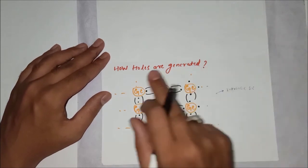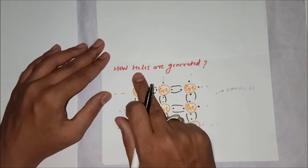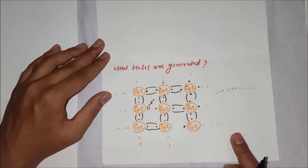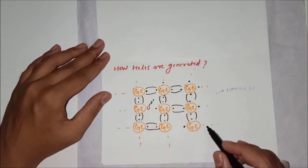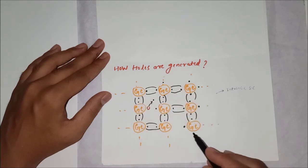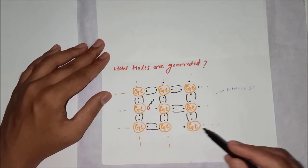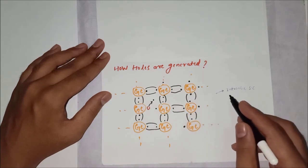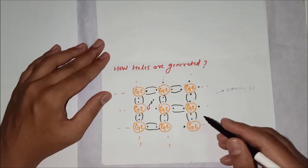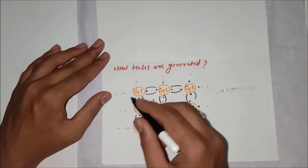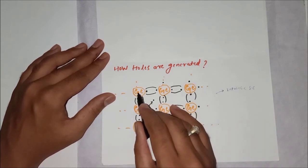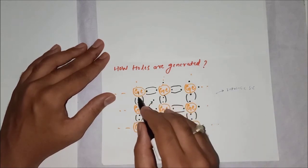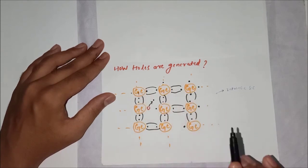Next: how holes, that is positive charges, are generated in a semiconductor. Consider a semiconductor slab made up of germanium — a pure germanium crystal. This pure semiconductor is called an intrinsic semiconductor. Germanium has four valence electrons, and all atoms in the crystal have four valence electrons forming covalent bonds.